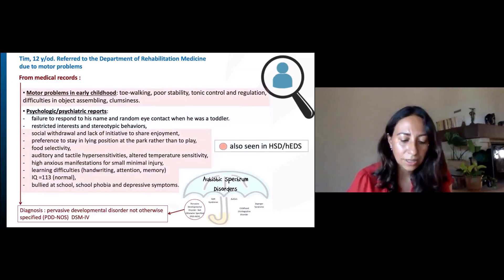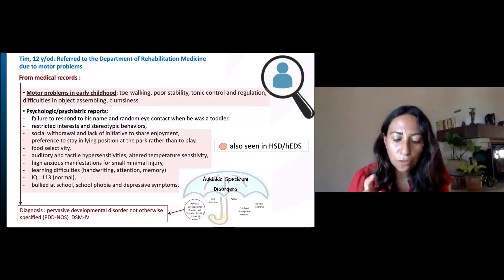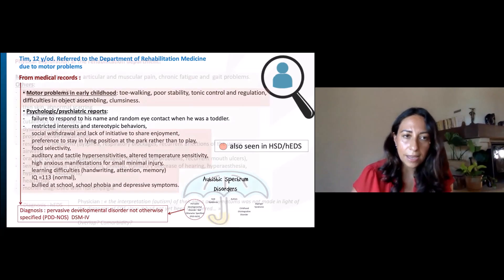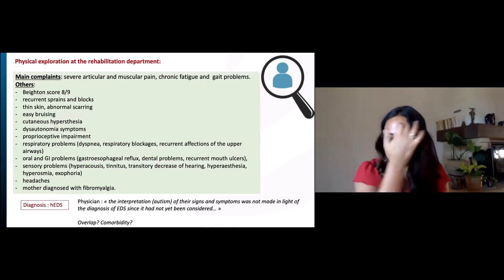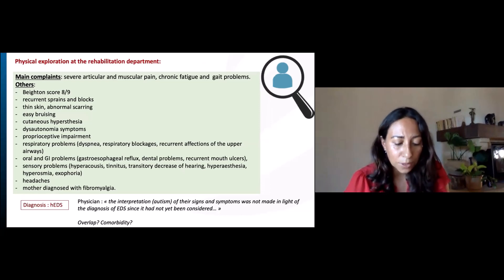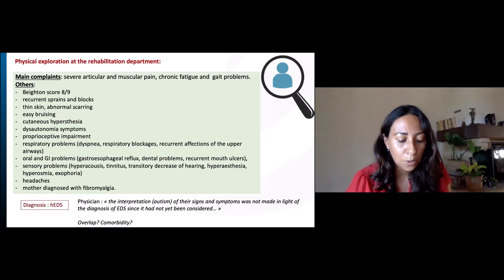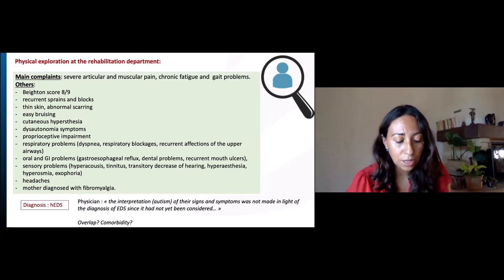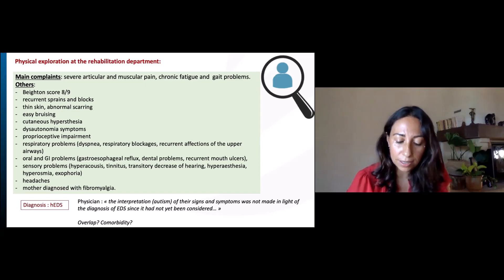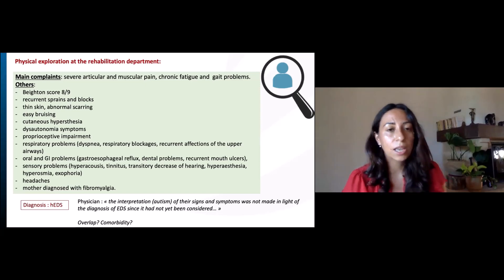We can note that all problems highlighted in color are also frequently reported by parents of children with hypermobile EDS. The exploration at the rehabilitation service revealed a positive Beighton score for hypermobility, history of recurrent sprain and joint blocks, thin skin, abnormal scarring, easy bruising, dysautonomia symptoms such as excessive sweating, poor thermoregulation, unexplained fever episodes, dry eyes and mouth, and dizziness. Finally, having ruled out other genetic possibilities, a diagnosis of EDS was retained for this patient according to the old criteria.